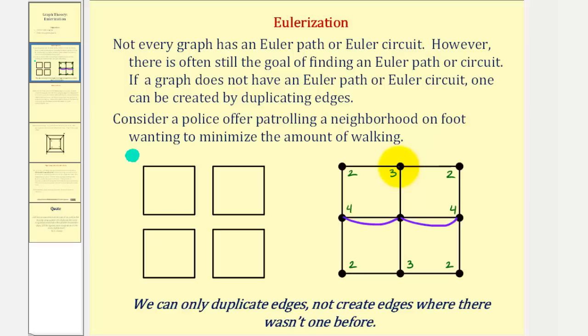But now we also have to connect this vertex to this vertex, so duplicate this edge and this edge. So now this vertex has degree four, and so does this, and this vertex now has degree eight.